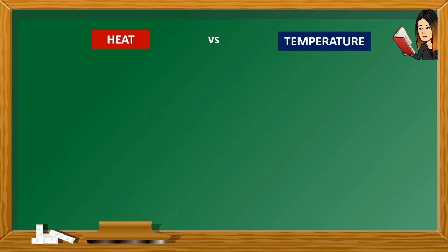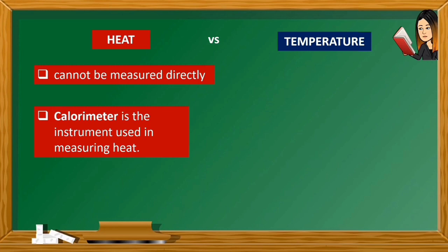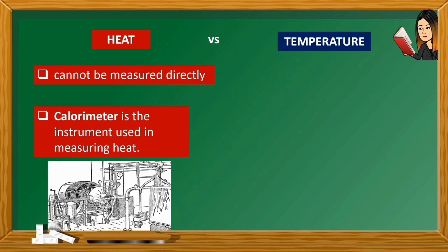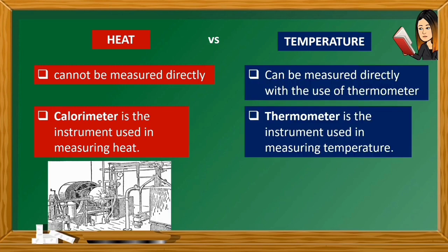Heat cannot be measured directly. The instrument used in measuring heat is calorimeter, while temperature can be measured directly with the use of thermometer. Thermometer is the instrument used in measuring temperature.